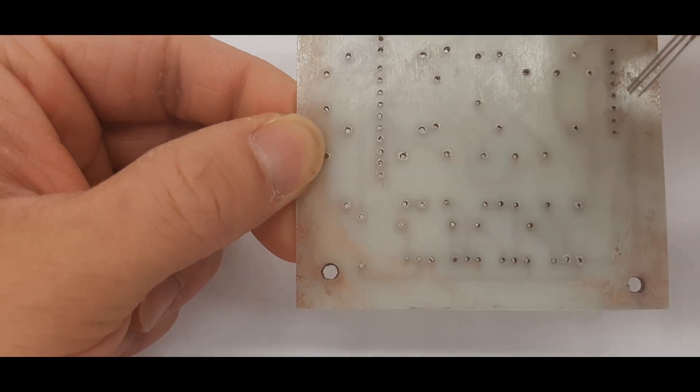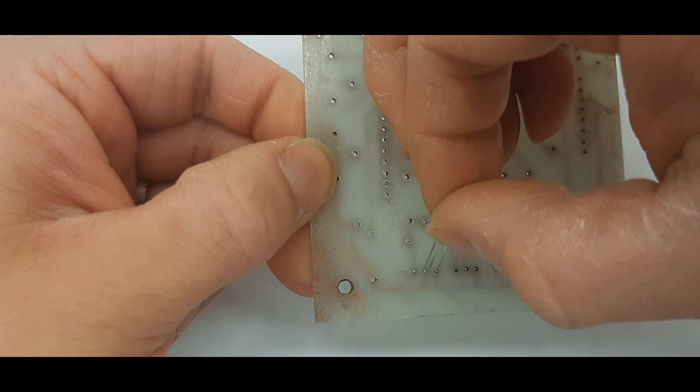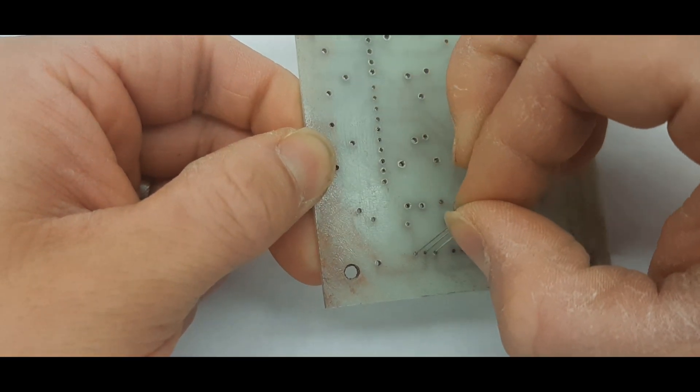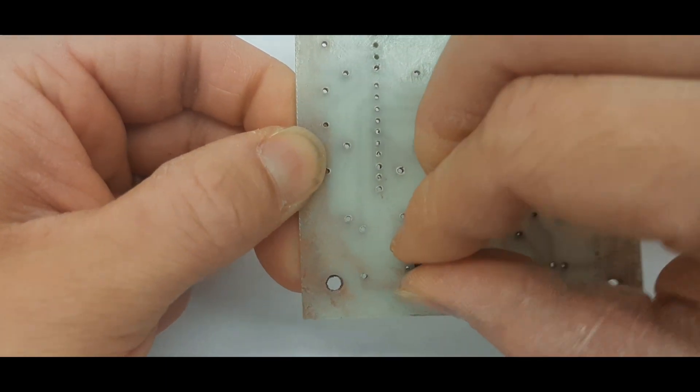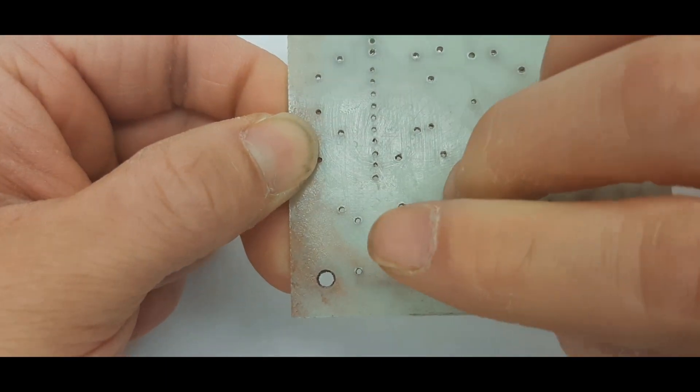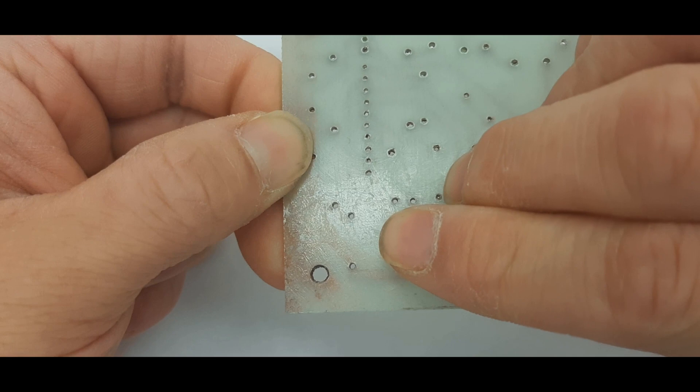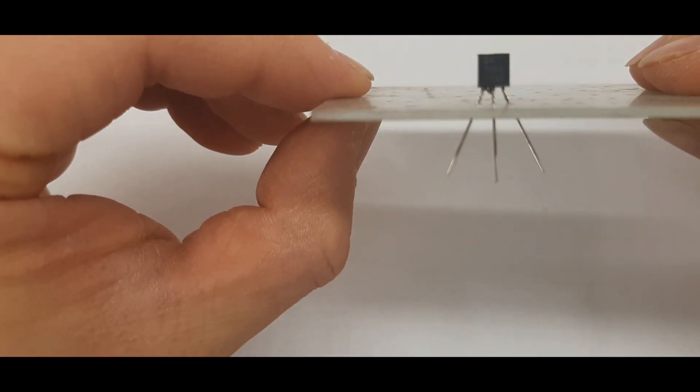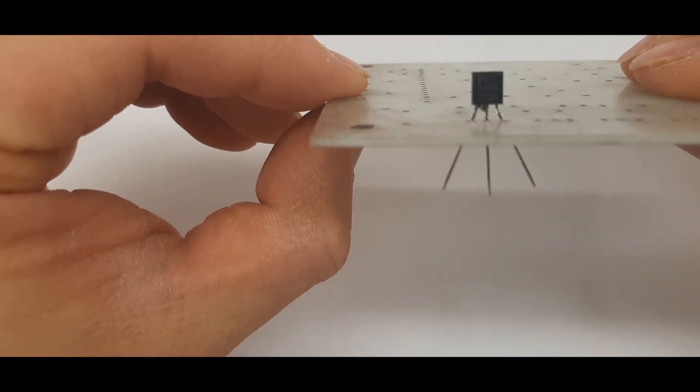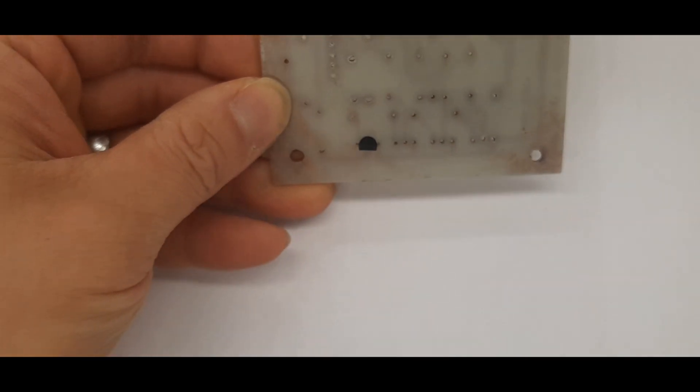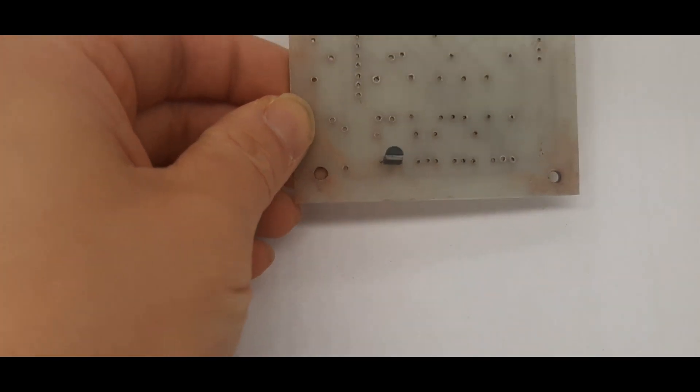Of course you always want to look at your circuit diagram when you're putting your transistors in, but in this case I know how they're supposed to go. They're supposed to go in like this and I like to have the transistor as low as possible on the board. You want to put all of the transistors that you're going to solder in right now.